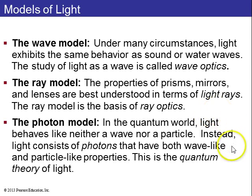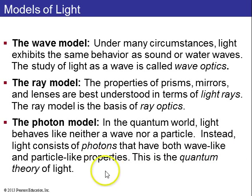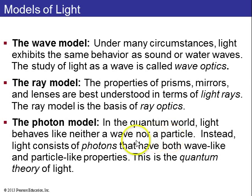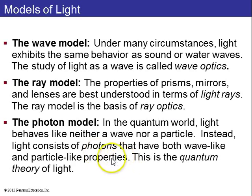If you go on to quantum mechanics, you'll eventually get to the photon model of light, which is that light doesn't really behave like a wave or a ray. It's a stream of little particles called photons, and that's called the quantum theory of light.